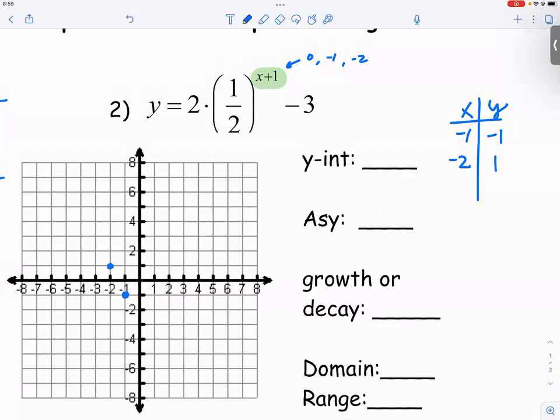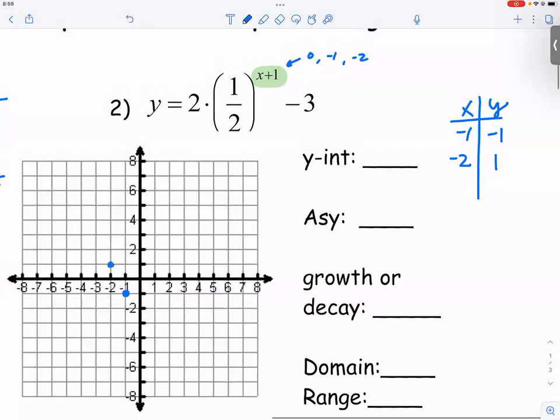So to create a power of negative two, so if we want the exponent to be negative two, we will need an X value of negative three. So for negative three, X is negative three, negative three plus one, it's negative two. So the exponent is negative two.